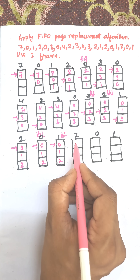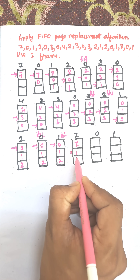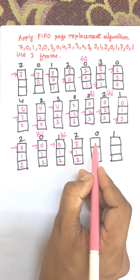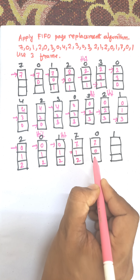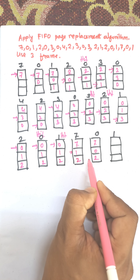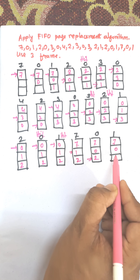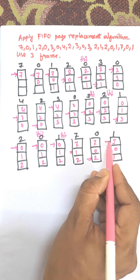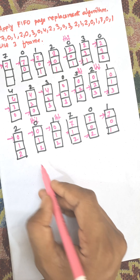Now page 7 comes in: it replaces the current target, and the pointer shifts to the next position. This gives frames 7, 0, 2, and finally 7, 0, 1 with the pointer moving back to 7. This completes the FIFO page replacement algorithm trace.